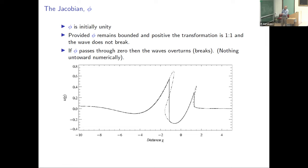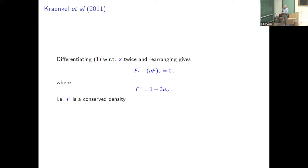Here's a typical integration: the dashed line is a characteristic integration showing it smoothly overturning, and the solid line is a shock-capturing algorithm. Krankel made a very interesting observation: if you take the reduced Ostrovsky equation, differentiate it twice, and rearrange, you get F_t plus the x-derivative of uF equals zero—just a continuity equation. F cubed, which is 1 minus 3u_xx, is a conserved density.